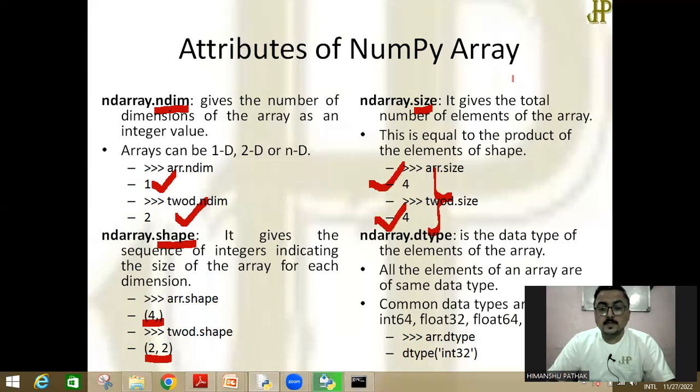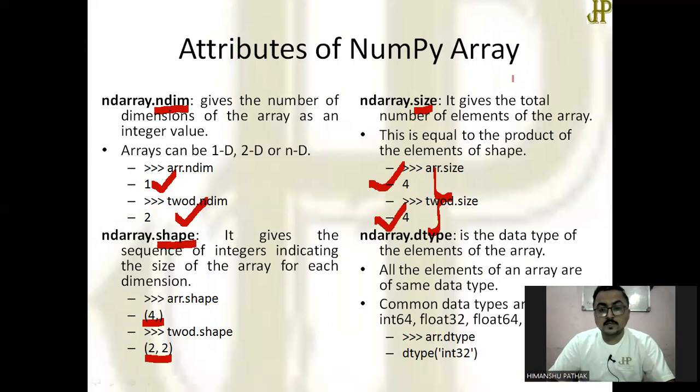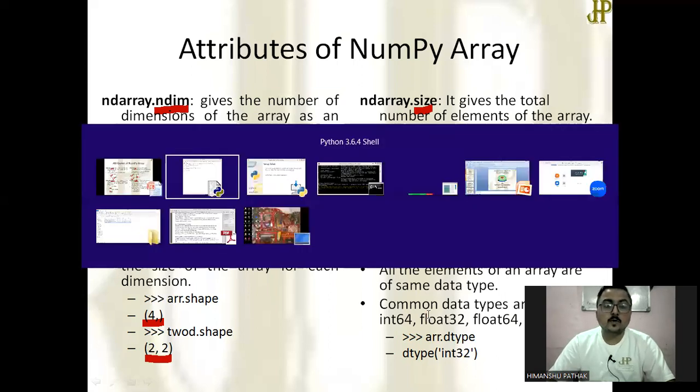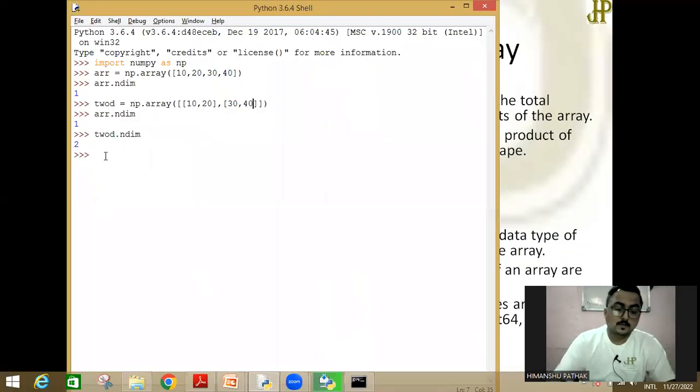And the last one is dtype. What is dtype? It is the data type of the elements of the array. It gives int64, int32, float32, float64, U32. U32 means unicode 32. It gives the type of data like this: arr.dtype. It is indicating that it is int32.